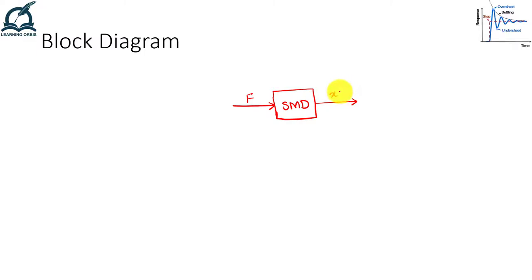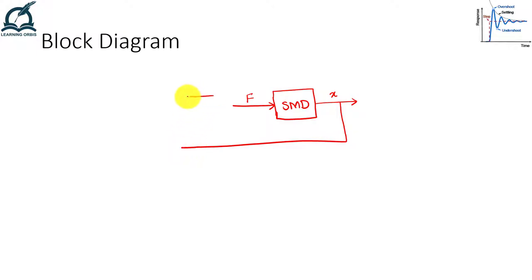If we want the mass to attain a particular position quickly, or exhibit a certain oscillation behavior, we need a controller that applies force on the spring-mass-damper system to achieve the desired movement. For that controller to work, it needs to know the current position of the mass, so we need position feedback.